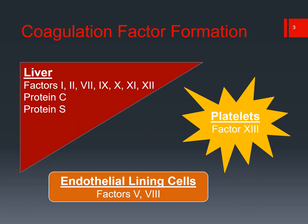We have a number of coagulation factors that are made throughout the body. The majority of these factors are made within the liver. Specifically, we have factors 1, 2, 7, 9, 10, 11, and 12, as well as proteins C and S, which are all made in the liver.